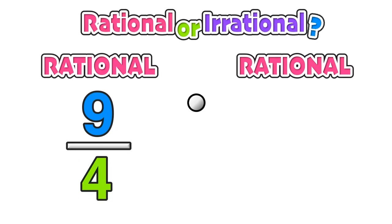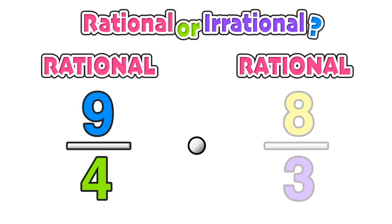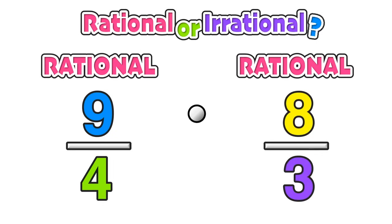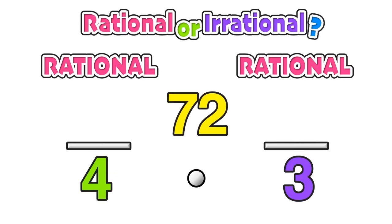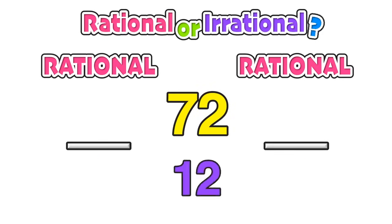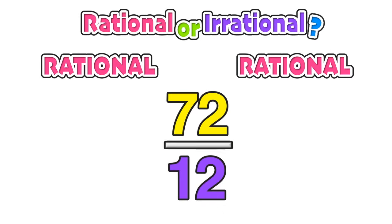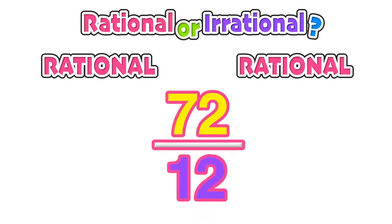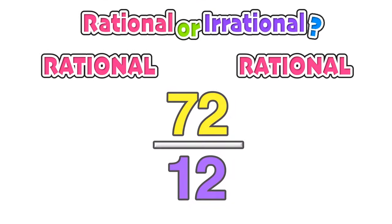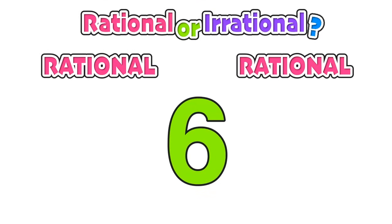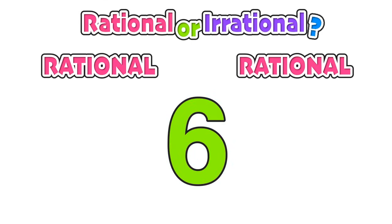Let's apply this to an example. We'll multiply 9 over 4 by 8 over 3 — both are rational numbers. Numerator times numerator: 9 times 8 on top is 72. Denominator: 4 times 3 is 12. 72 divided by 12 is equal to 6, which is of course a rational number, helping us understand why the product of two rational numbers is still a rational number.